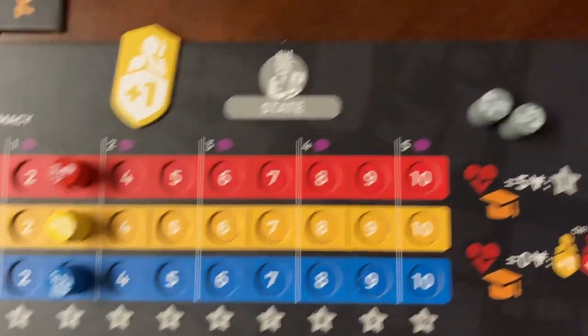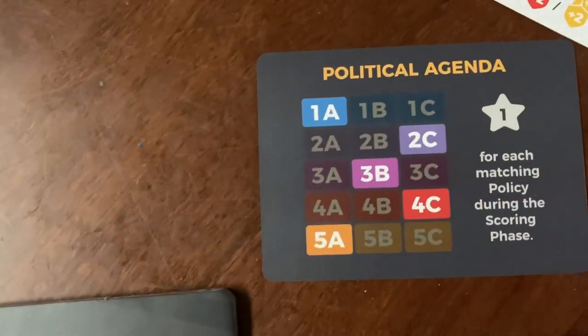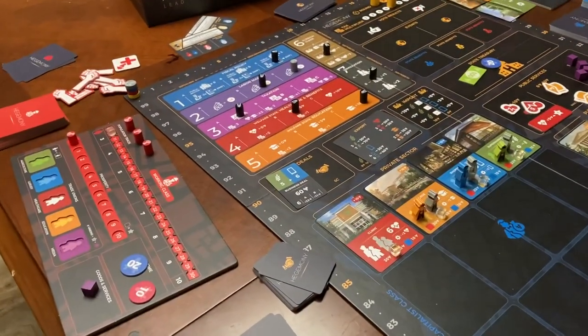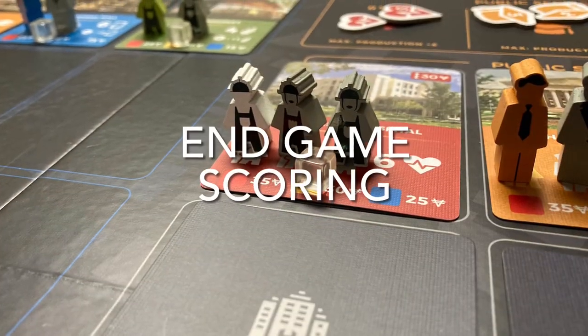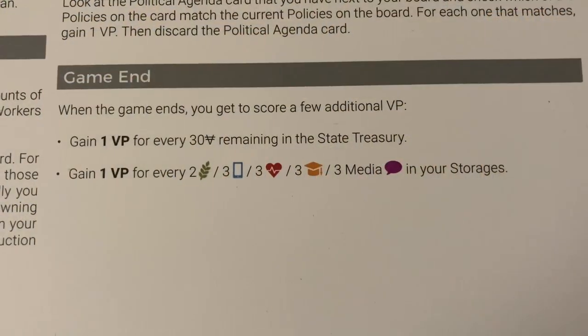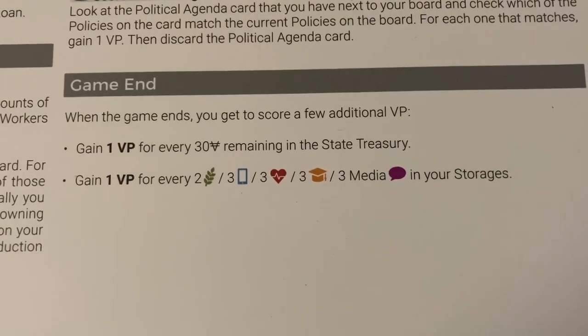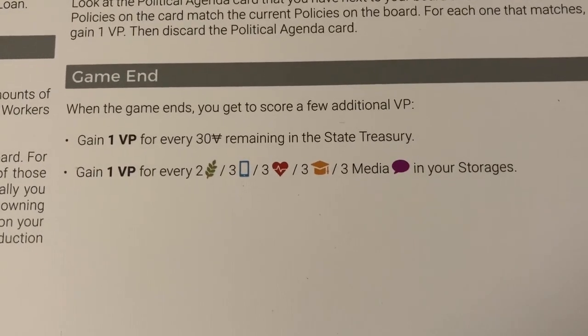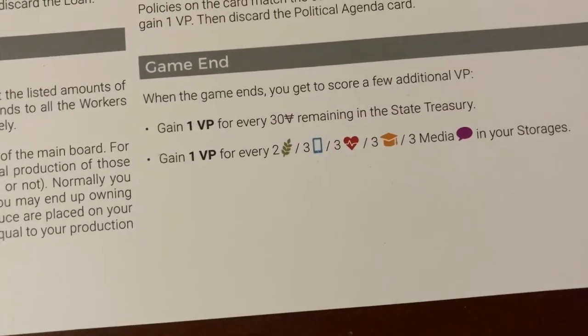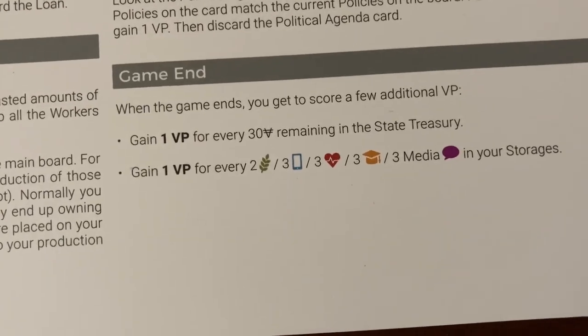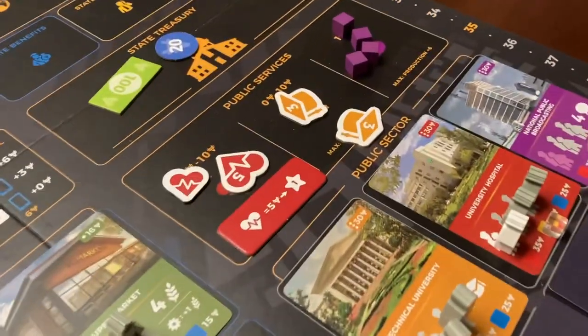The last part of the scoring phase is to check the political agenda and see what policies match what's on the board — each match gets one extra victory point. At the end of the game, the state gains one victory point for each 30 remaining in the state treasury. They also gain one victory point for every two food, three luxury, three health, three education, and three media in their storages, whether on their board or in the public services area on the board.